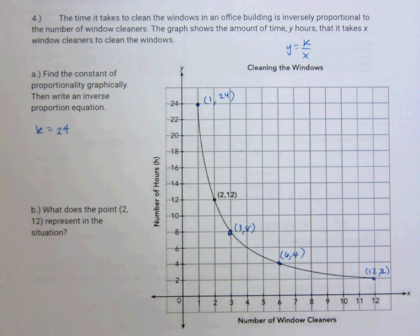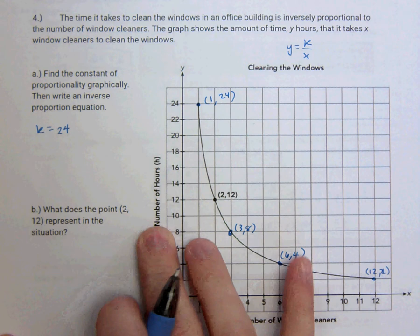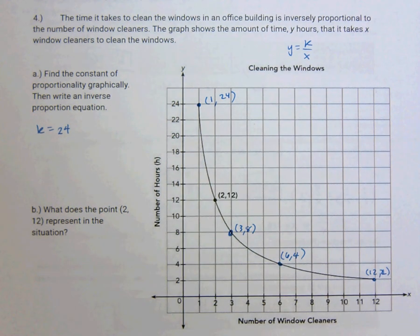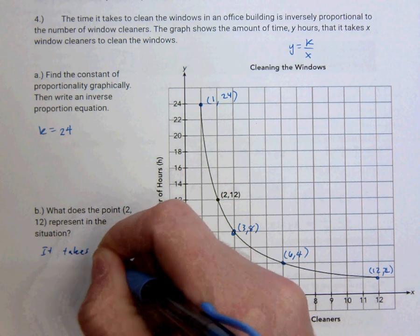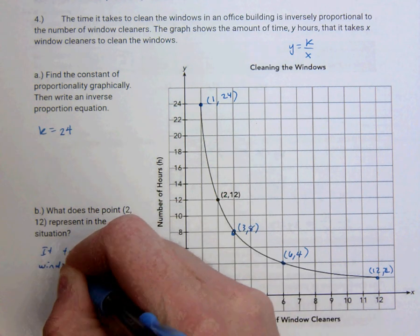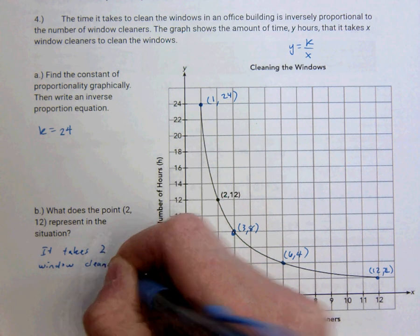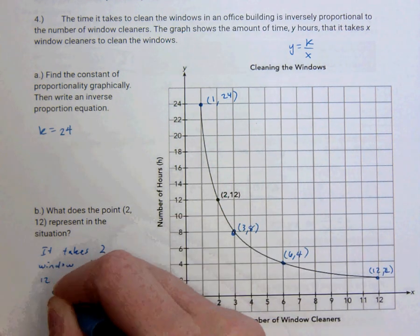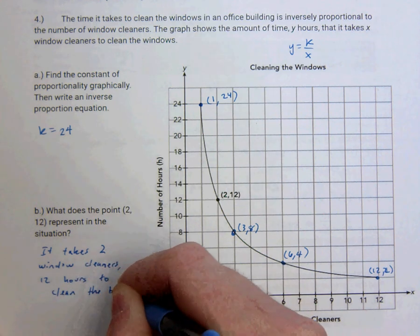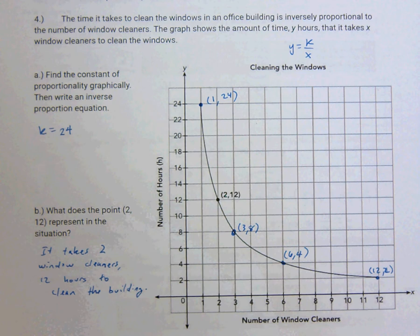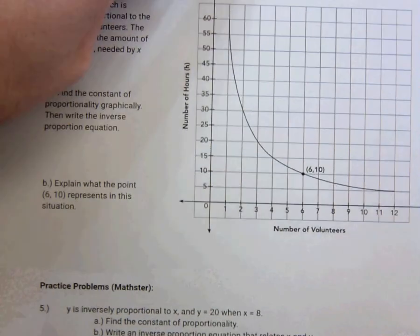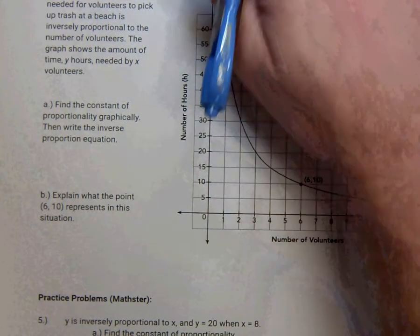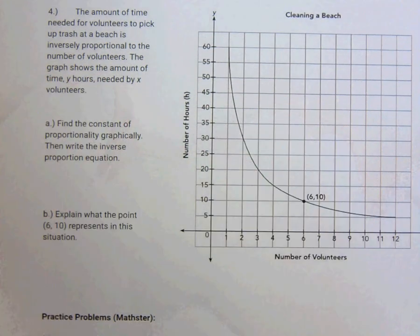What does the point 2, 12 represent in this situation? So remember, this is about number of window cleaners, number of hours that it takes to clean the window. Words matter. So this is saying that if 2 window cleaners, it takes 2 window cleaners 12 hours to clean the building. Alright. Let's move on to the back. This is you. Very similar question. Do that. This is me.